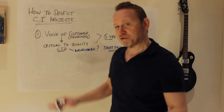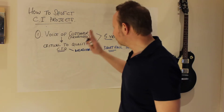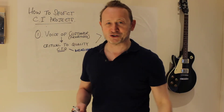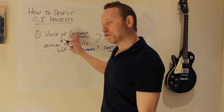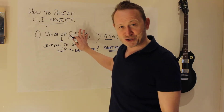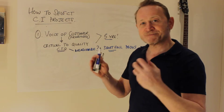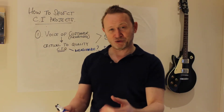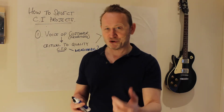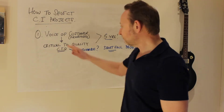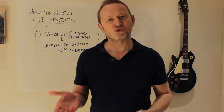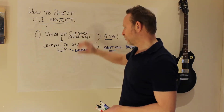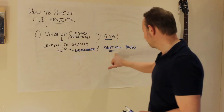Doing it this way can pick out projects for Design for Six Sigma — it can tell your designers what to do when designing new products and services. But it also tells you, for the products and services currently in production, what things you should work on to improve. So: voice of the customer, CTQs, look for the shortfall, do a project. Very straightforward.